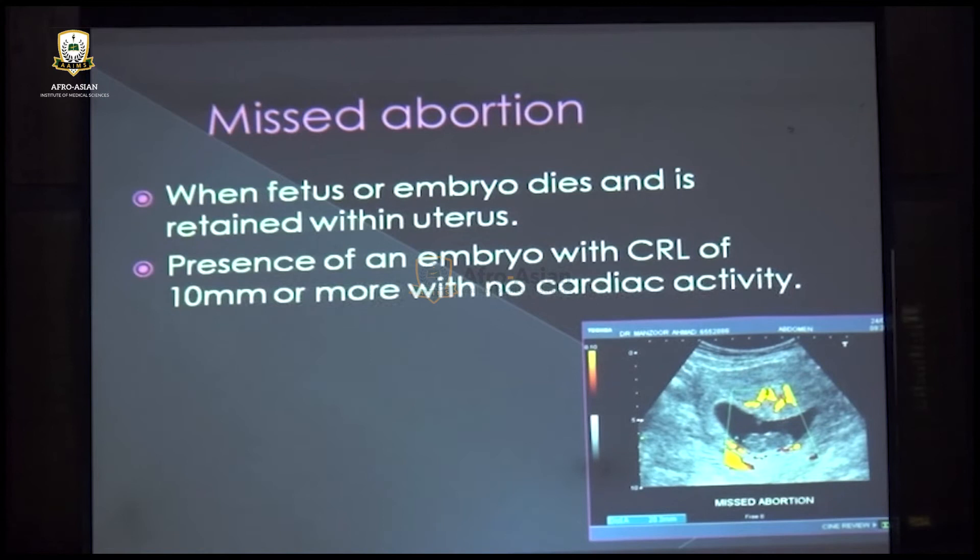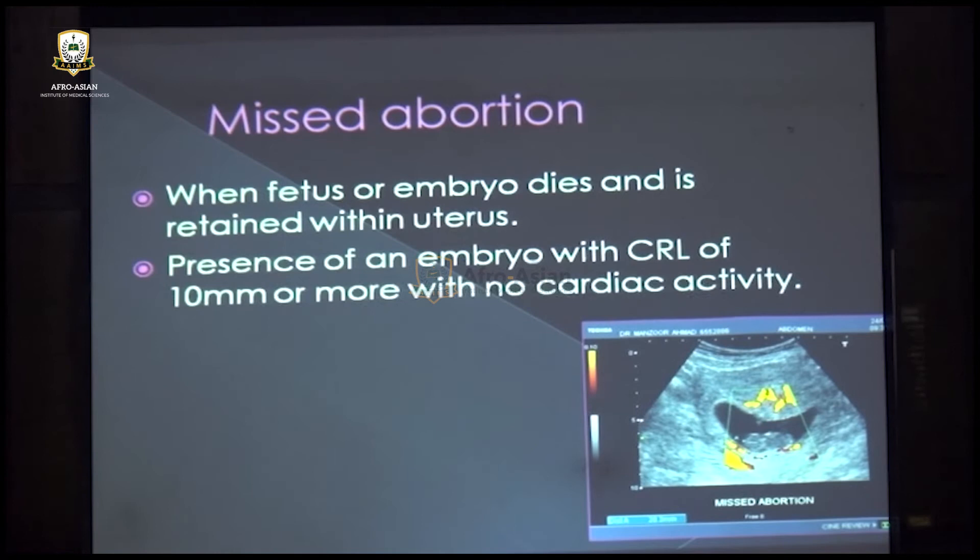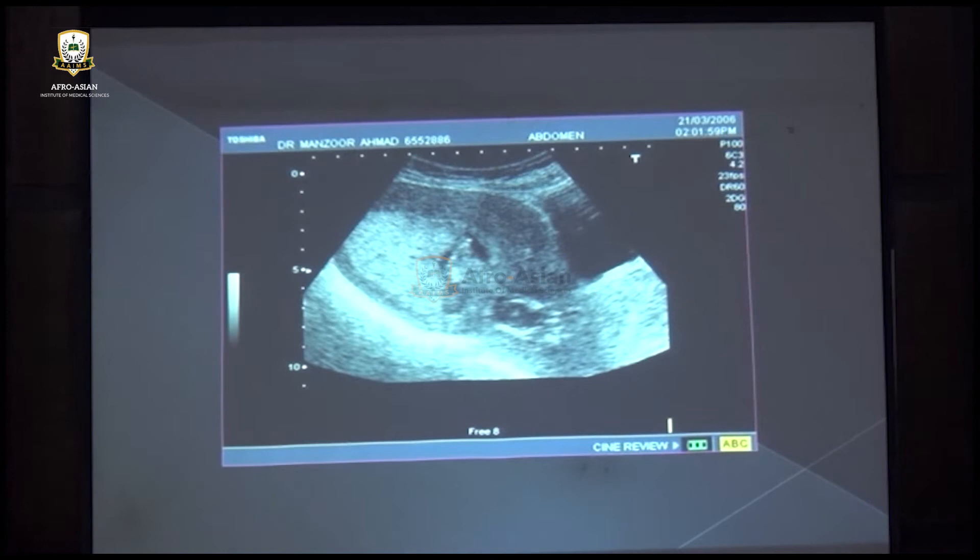Missed abortion is the term when the fetus dies inside the uterus but is retained. You will see an embryo with no cardiac activity — that is missed abortion. Another case where the baby is dead inside is also labeled as missed abortion and will be a cause of vaginal bleeding.